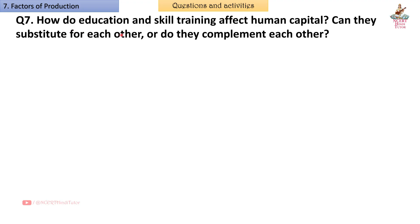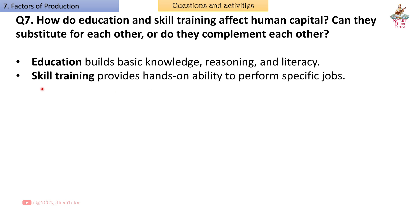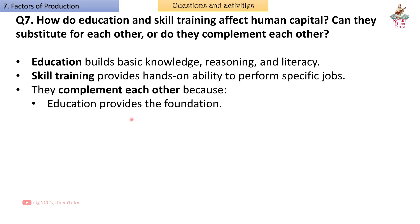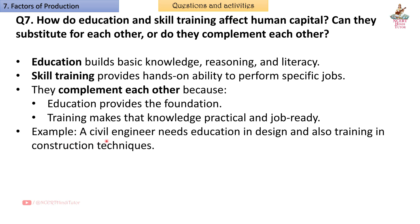Question 7: How do education and skill training affect human capital? Can they substitute for each other or do they complement each other? Answer: Education builds basic knowledge, reasoning, and literacy. Skill training provides hands-on ability to perform specific jobs. They complement each other because education provides the foundation, and training makes that knowledge practical and job-ready. Example: A civil engineer needs education in design and also training in construction techniques.